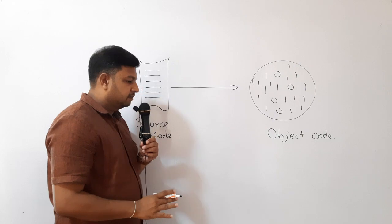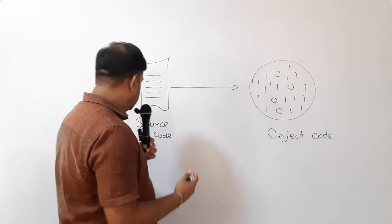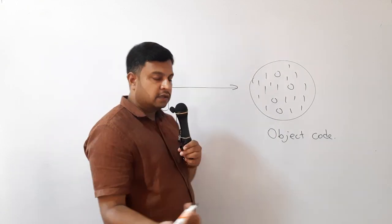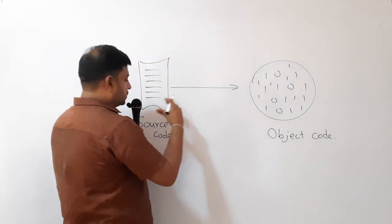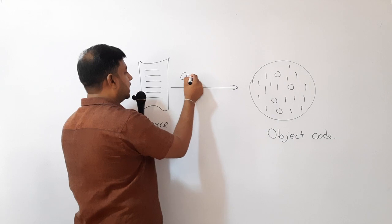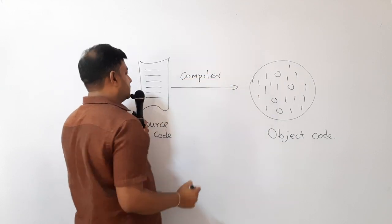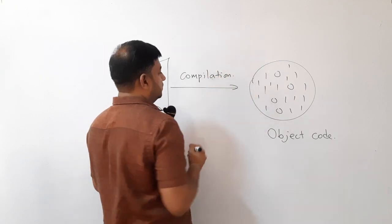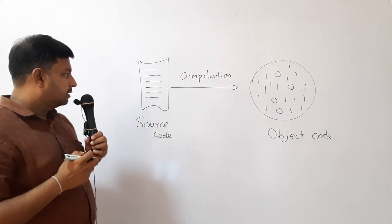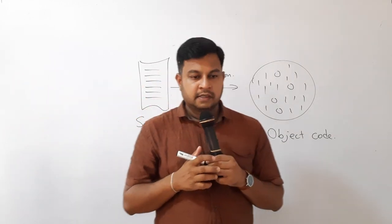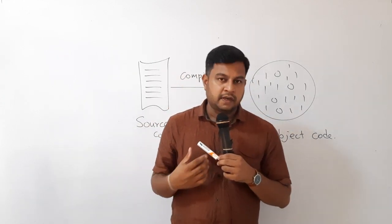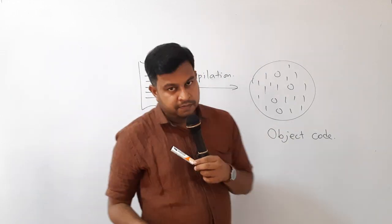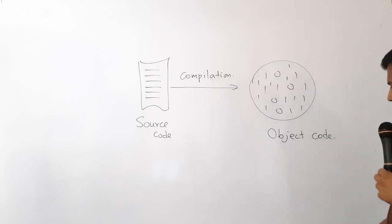We'll discuss those details later. For now, as new students to programming, just understand: this is the source code, this is the object code, and it is translated by a program translator. There are many program translators — mainly, the source code is converted into object code using a compiler. This process is called compilation. Not only compilers, but there are also interpreters and assemblers. We need to study each type of program translator. For any kind of program translator, the same job is done: the source code is translated into object code — that is the process of program translation.